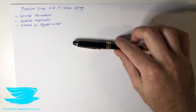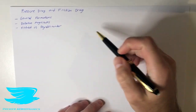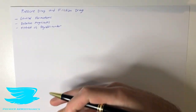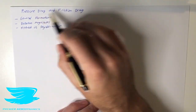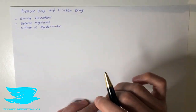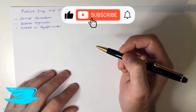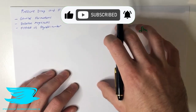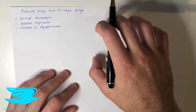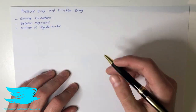What is up amigos? Today we are talking about the pressure drag and friction drag of cars. We're going to go through their general formation — how they form, what creates them, the relative magnitudes between the two, and the effect of the Reynolds number on these two, which is quite an interesting effect. If you haven't looked at our videos on aero fundamentals, check those out. Otherwise, we'll just go through it briefly here.